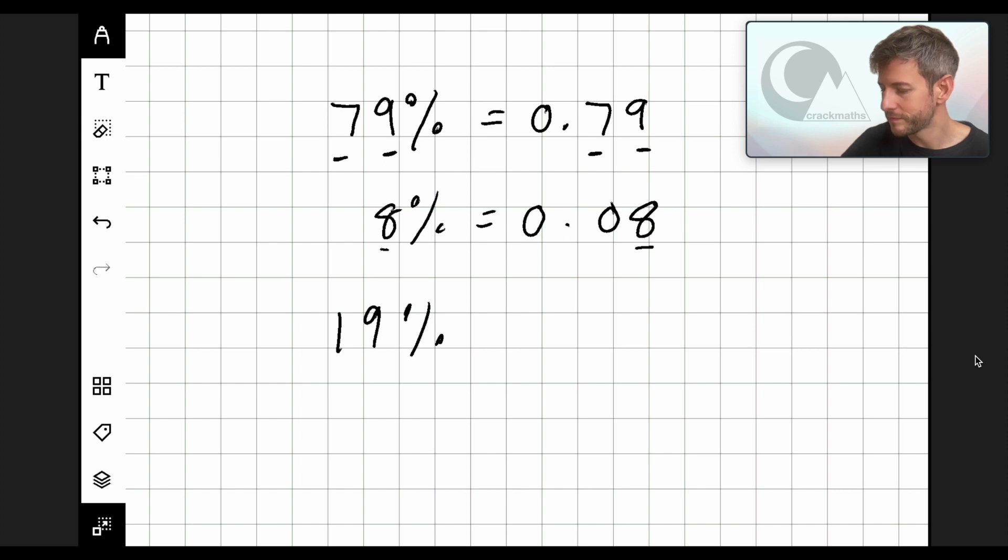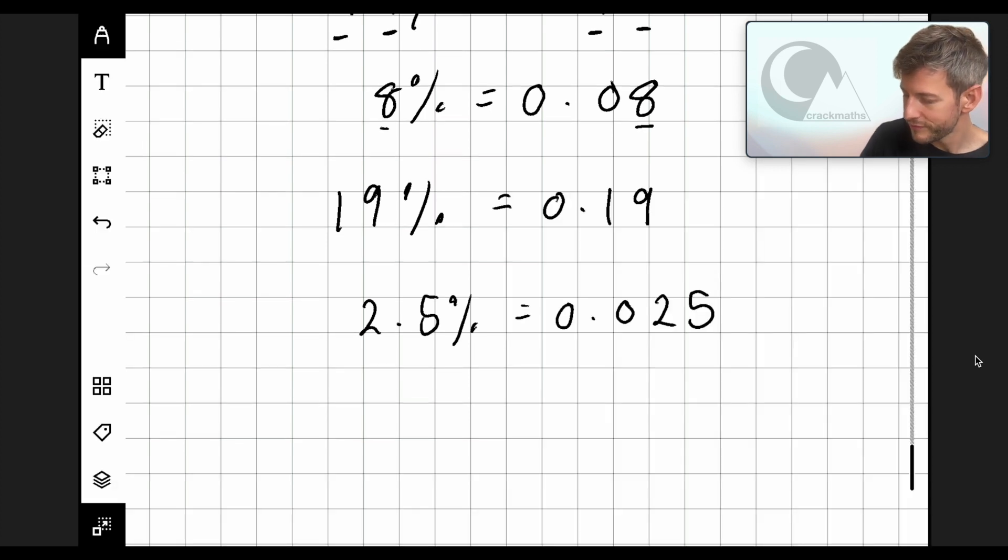19% this would equal 0.19. 2.5% this would equal 0.025. OK, we can try a few more. 41.2% would equal 0.412. But each time what we're doing is we're dividing these numbers by 100. So here we go. Just a quick recap.